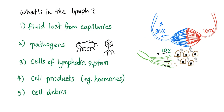So what's in your lymph? Fluid lost from capillaries, pathogens, cells of the lymphatic system such as lymphocytes, natural killer cells, cell products such as hormones, and some nasty cell debris.